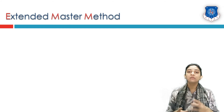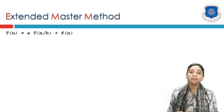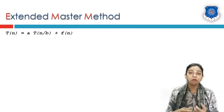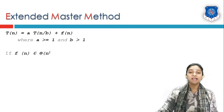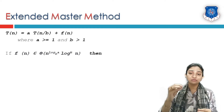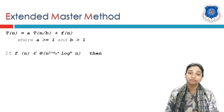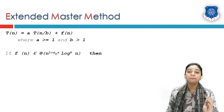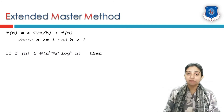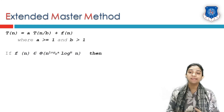Now let us understand the extended master theorem. The master theorem still applies to T(n) = a·T(n/b) + f(n), but the difference lies in what f(n) is. When f(n) is of the type n^(some power) times log^(some power) of n, we apply the extended master theorem. When f(n) is simply a polynomial n^d, we use the standard master theorem.